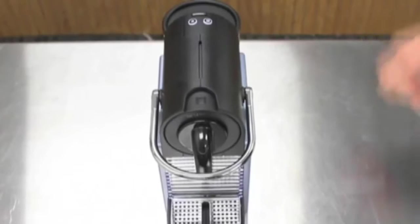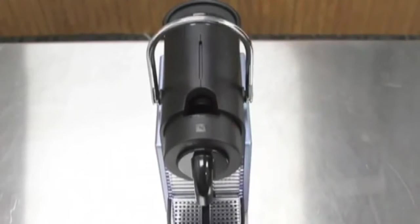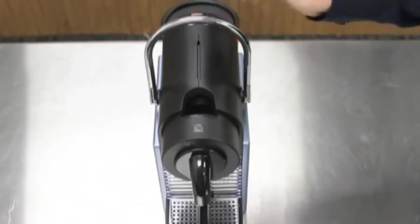To start the brewing process, make sure your machine is on and that your buttons are solidly illuminated. That means your machine is up to temperature and ready to brew.